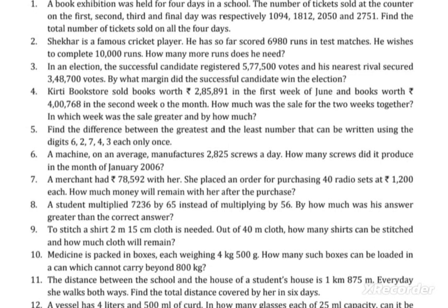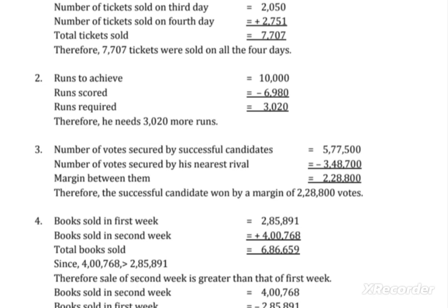The fourth question: Kirti Bookstore sold books worth 285,891 in the first week of June, and books worth 400,768 in the second week. How much was the total sale for the two weeks together? Also, which week had the greatest sale and by how much? In the first week, books sold were worth 285,891.